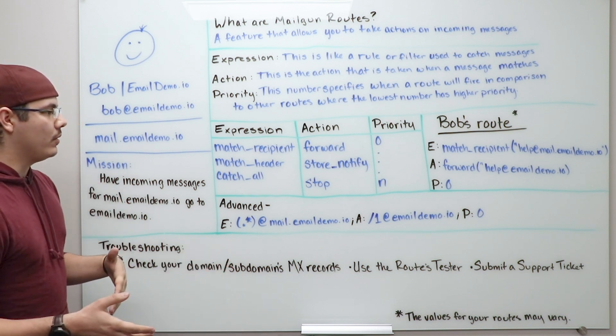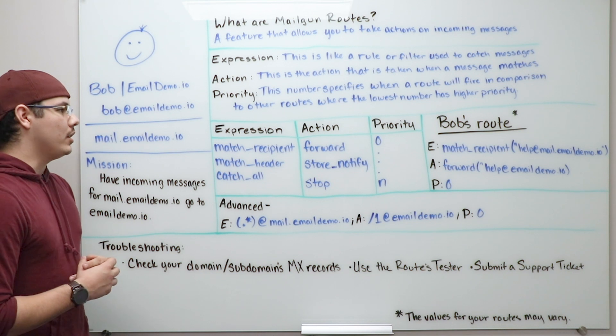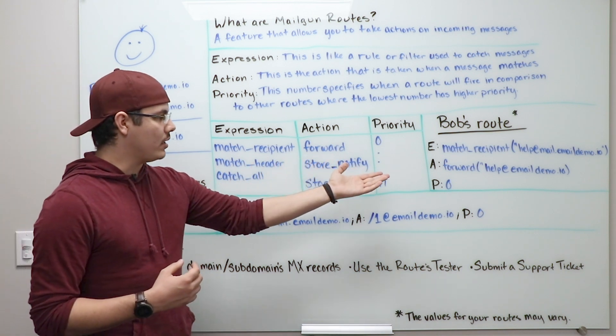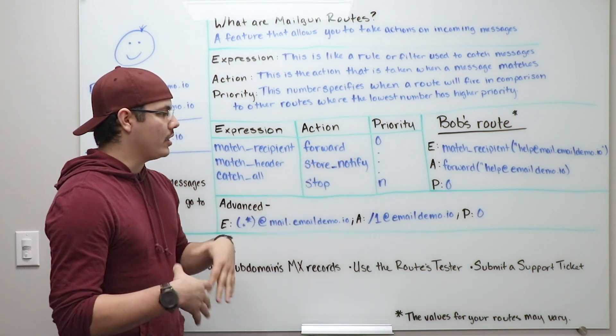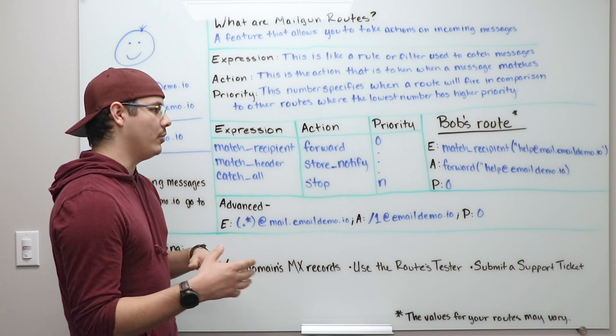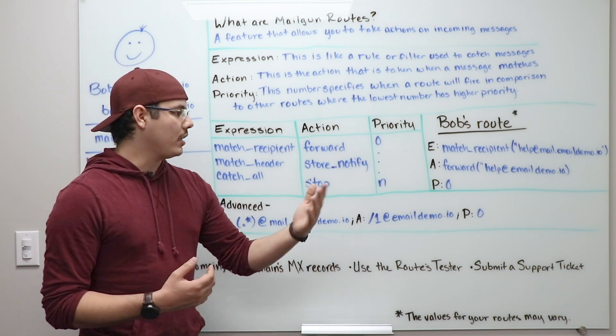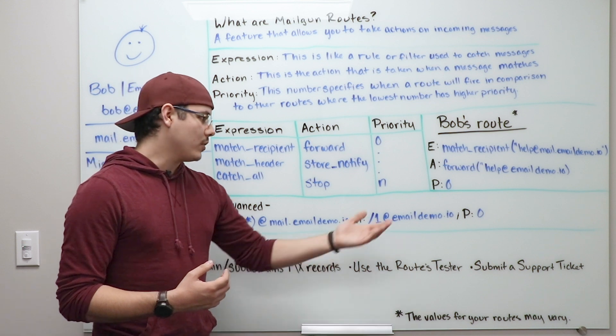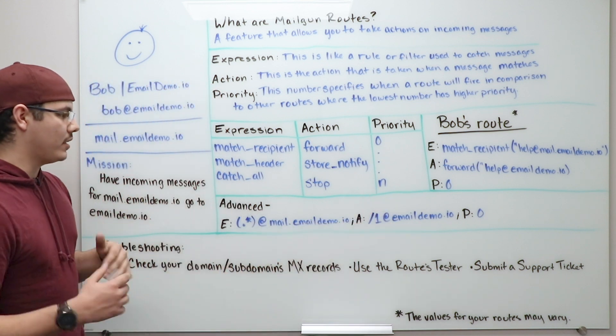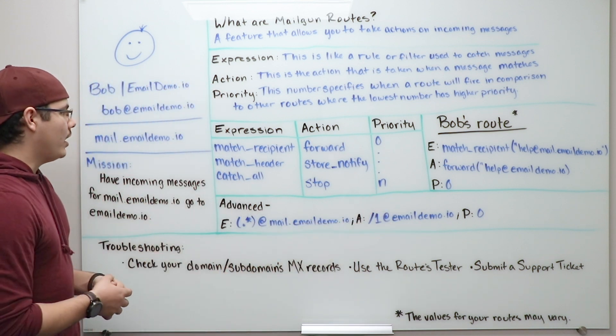Now, Bob's route to make this work, he can do a match recipient as you see here. And he can match anything coming in to help at mail.emaildemo.io, for instance, and forward that on to help at emaildemo.io with, of course, a priority of zero so it goes the fastest that we have.